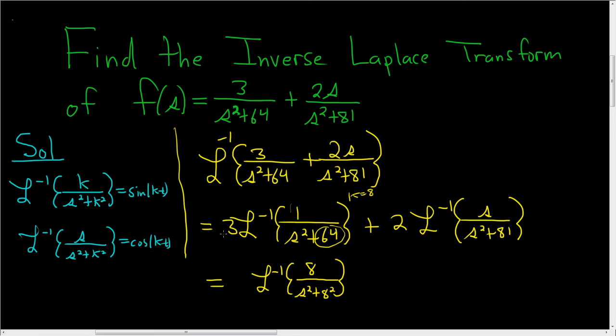Now we still have the 3, and by putting the 8 there we need to get rid of it, so we'll write it like this, 3 eighths. That way the 8s cancel and we get 3. And plus 2 and then inverse Laplace. Here we have s over s squared plus 9 squared. So here we have an s, so we're going to get a cosine.